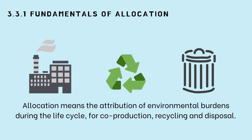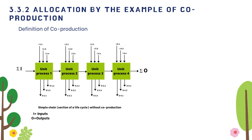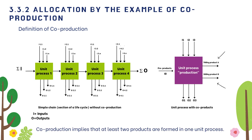What is allocation? Allocation means the attribution of environmental burdens during the life cycle for co-production, recycling, and disposal. In a simple chain section of a life cycle without co-production, the sum of the inputs I and outputs O is the sum of individual amounts. Co-production implies that at least two products are formed in one unit process.